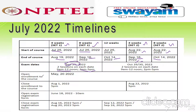Enrollment opens on May 20th. The enrollment close date for four-week Set 1, eight-week Set 1, and the 12-week course is August 1st, up to 5 PM only — that is very, very important. Four-week Set 2 and eight-week Set 2 enrollment closes on August 22nd, also up to 5 PM.